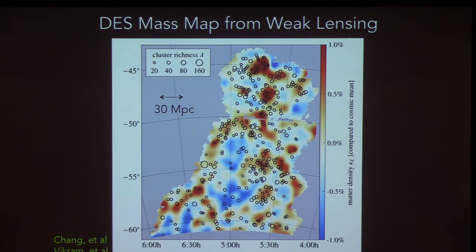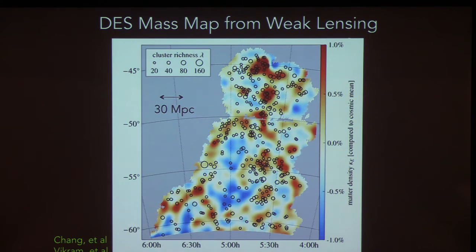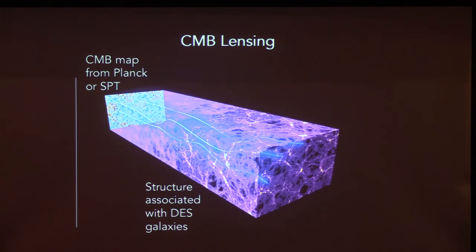This 150-square-degree region map now shows projected mass inferred from weak lensing measurements: red regions are overdense where there's been a lot of light bending; blue shows underdense regions. This is a map of the total mass, including both luminous and dark matter. Superimposed in circles is the distribution of optically identified clusters in the same data in the foreground. As expected, where you see an overdensity from weak lensing is where you tend to see many clusters of galaxies, and in the voids you see relatively few rich clusters. The cross-correlation between them is consistent with what we expect from the models.